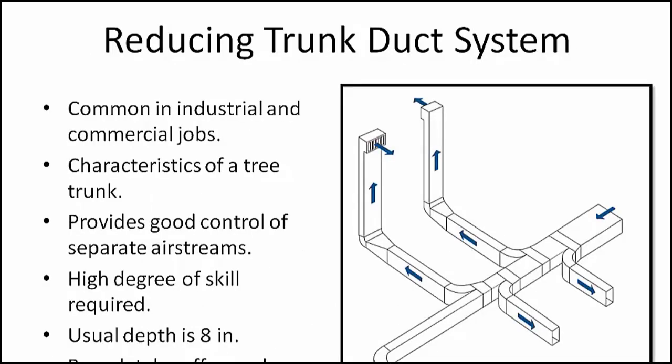The reducing trunk duct system maintains pressure from start to finish by reducing the size of the trunk duct as branch ducts are connected. Shown on this page, it is common in industrial and commercial installations and in some residential jobs. The main feature of this arrangement is that the system has the characteristics of a tree trunk — it is broad at the base and gradually gets smaller as the branches sprout. When properly designed and installed, a reducing trunk duct system provides good control of separate air streams and uses a minimum of sheet metal. Because of the many specially shaped fittings, installation cost is high and a high degree of skill is required of the sheet metal craftsman. Most of the duct work has to be built at a shop, with construction based on spot measurements made on the site and close tolerances.